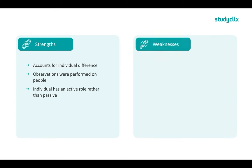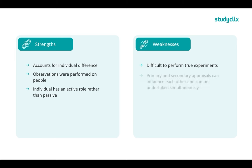Now for the weaknesses. It is difficult to perform true experiments with this model, because it is unethical to put people in stressful situations to see what happens. It is also difficult to analyze what people are thinking, so the research tends to be more observation-based and questionnaire-based, which can produce unreliable results. Additionally, primary and secondary appraisals can influence each other and are considered to be taken simultaneously.